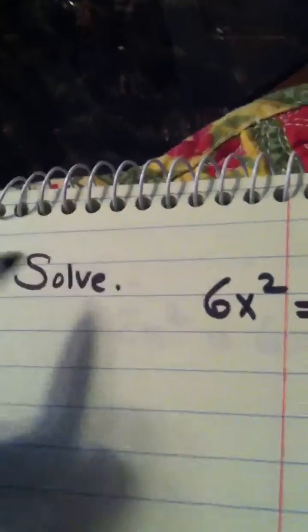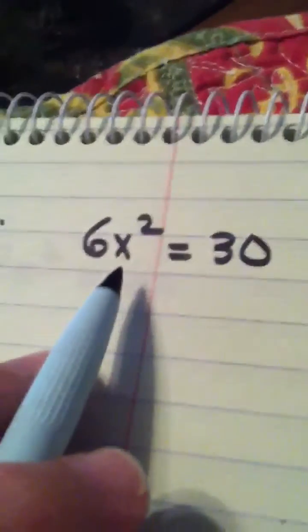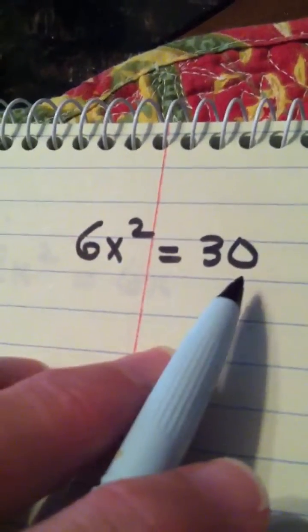Okay, ladies and gentlemen, we're continuing here with section 3.2. We're asked to solve the equation 6x squared equals 30.